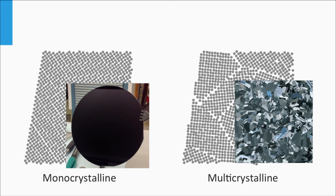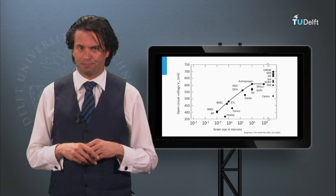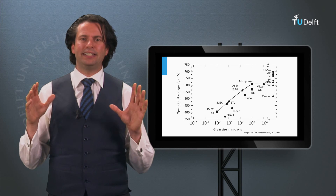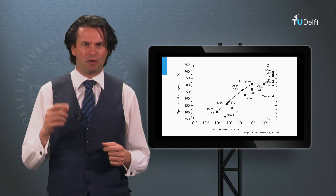The grain size plays a role as well. In a figure from a paper by Bergman, we see the relation between open-circuit voltage of various solar cells based on multicrystalline wafers. The horizontal axis shows the average grain size: the larger the grain size, the longer the charge carrier lifetimes, and the larger the band gap utilization and open-circuit voltage. Monocrystalline silicon, having no grain boundaries, achieves much larger open-circuit voltages. The question now is how do we make these types of silicon wafers — monocrystalline and multicrystalline — which will be discussed in the next block.